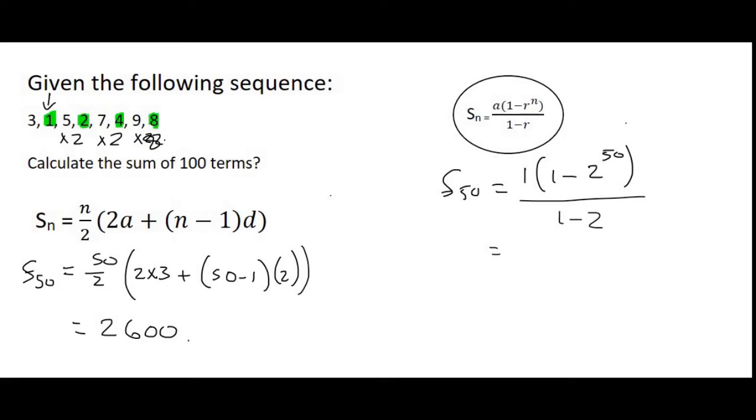And I should have chosen a smaller number of terms because that 2 to the power of 50 is an extremely big number. So it's a bit of a silly example now because you'll see what's going to happen. But if we round to two decimal places, it's going to be approximately 1.13 times 10 to the 15.